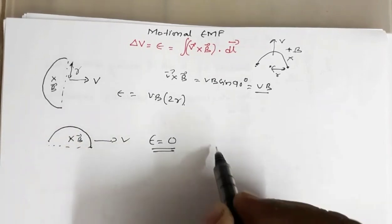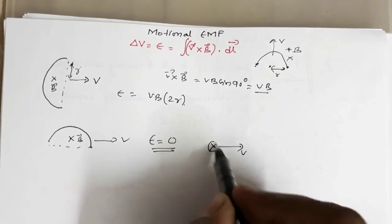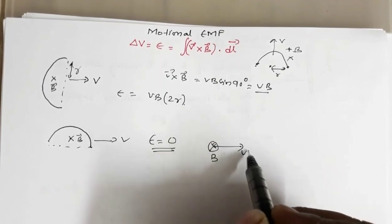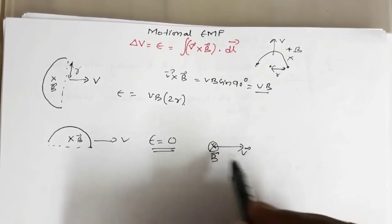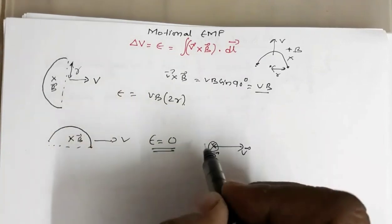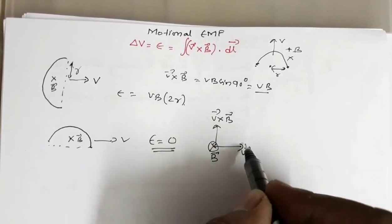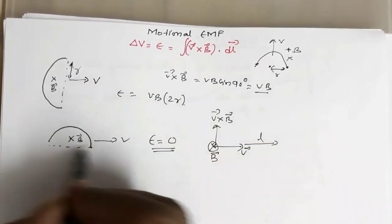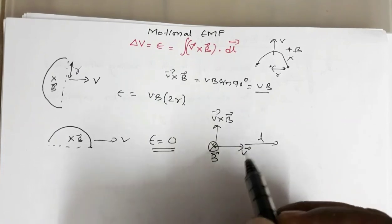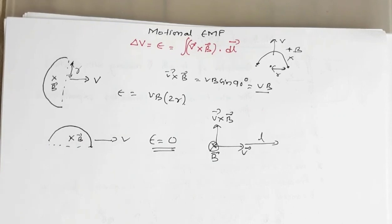See, V is in this direction. In this case B is directed inward. So V cross B — this is B, this is the velocity vector V in this direction, magnetic field is directed inward — so V cross B is in this direction. The length is in this direction. The angle between V cross B and the length is 90°. So this dot product will be 0. Therefore the EMF induced in this case will be 0.